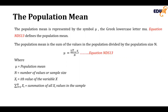The population mean is the sum of the values in the population divided by the population size, and it serves as the measure of central tendency for the population. This is very similar to how we calculated the mean for a sample — the process remains the same, that is the arithmetic mean — only the symbol changes. In the case of population, the mean is called mu.